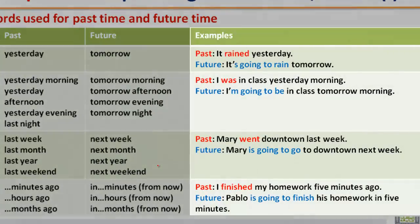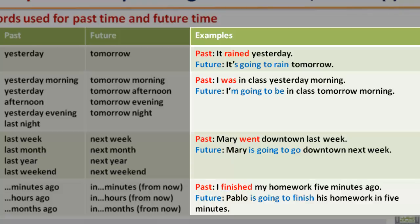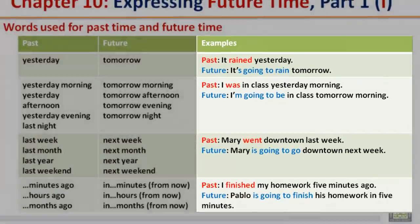Examples comparing past and future time expressions. Past: It rained yesterday. Future: It's going to rain tomorrow. Past: I was in class yesterday morning. Future: I'm going to be in class tomorrow morning. Past: Mary went downtown last week. Future: Mary is going to go downtown next week. Past: I finished my homework five minutes ago. Future: Pablo is going to finish his homework in five minutes.